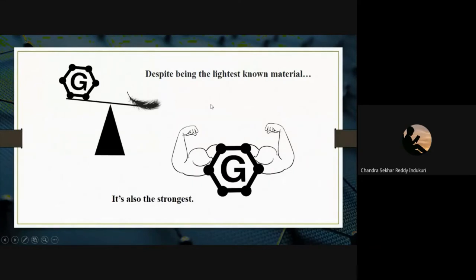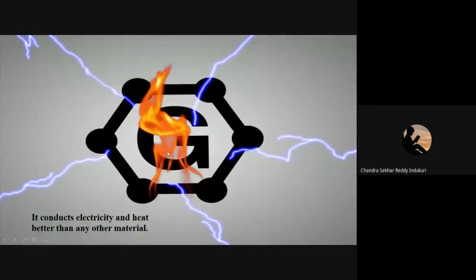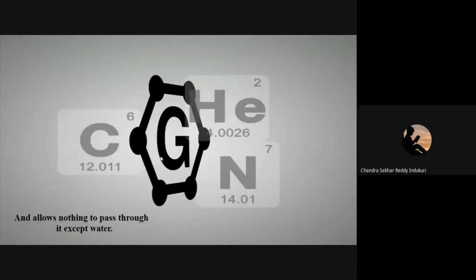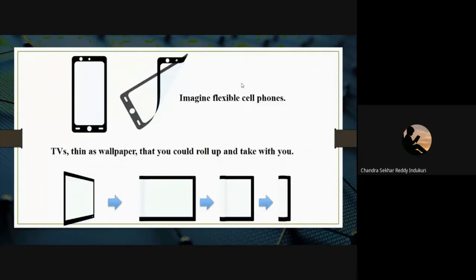These scientists also found graphene to be the lightest and strongest material — harder than diamond and 200 times stronger than steel. It conducts electricity and heat better than any other material. It also allows nothing to pass through it except water — not even helium atoms — based on the diameter of the holes in the honeycomb structure.